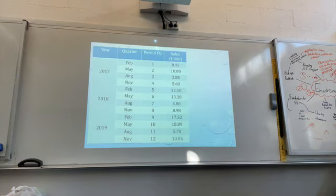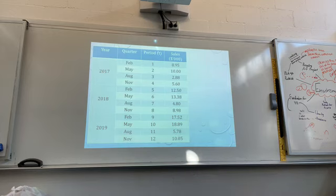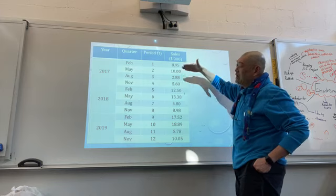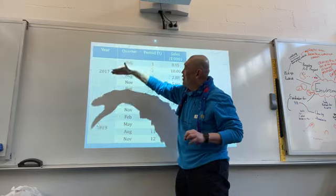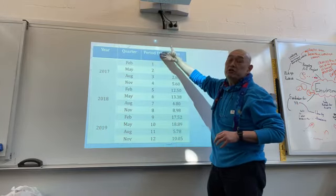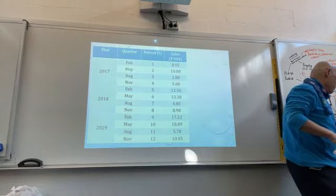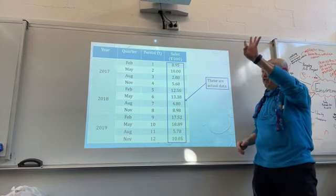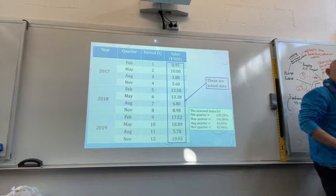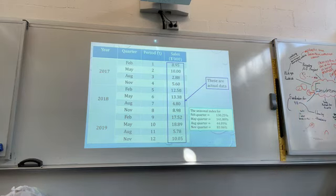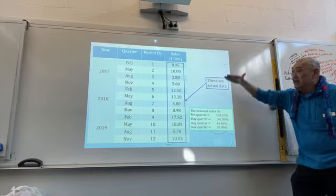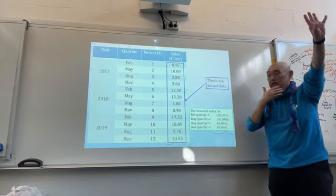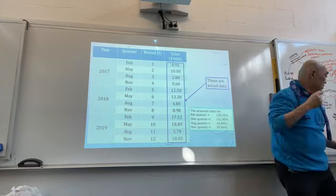Let's have a quick look at the data from last week. We used quarters one through eight and worked out the four-point centered moving average. The periods were labeled numerically — February, May, August, November — and we recognized the data is seasonal with a period of four. We also worked out the seasonal index. There should be four seasonal indices, and their sum should equal 400%.